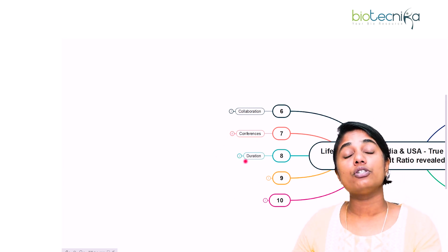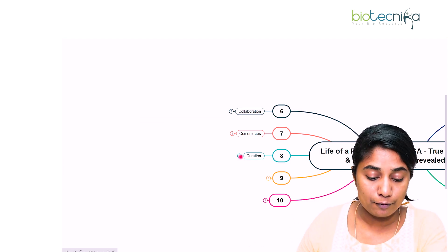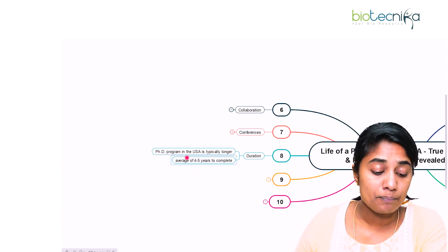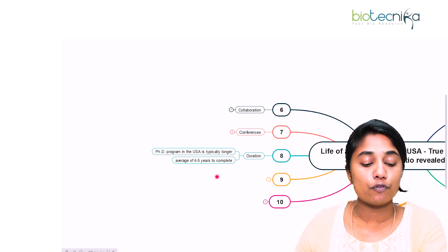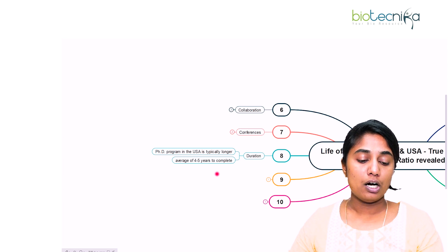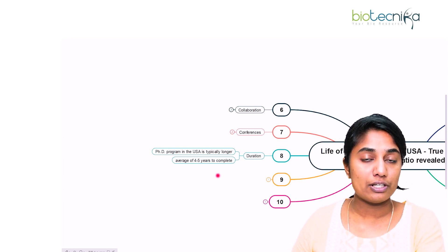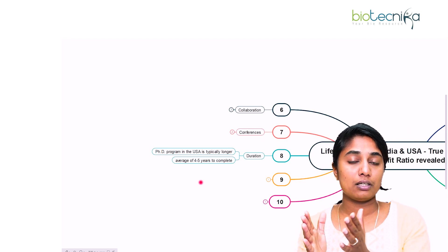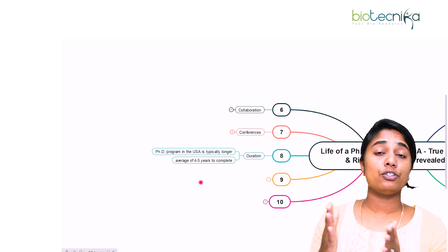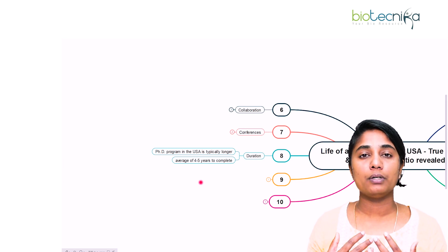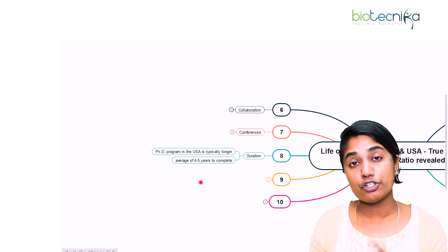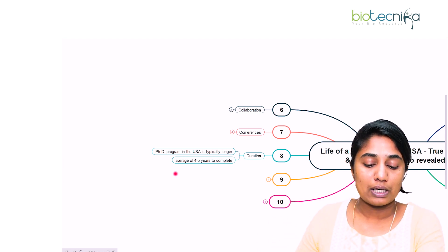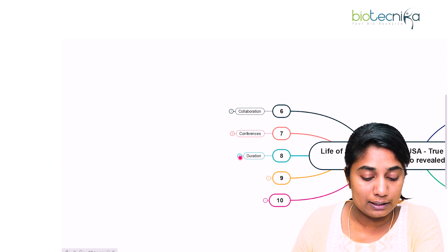The eighth point is the duration of the PhD course itself. The PhD program in USA is typically longer compared to India — on average, it takes around four to five years to complete a PhD in the USA, and it might even take longer. In India, there is a possibility to complete it within three years, depending on your advisor, the university, how fast you publish papers, and finish your curriculum.